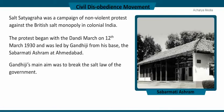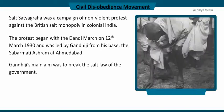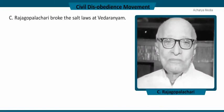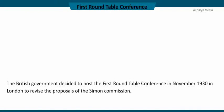His main aim was to break the salt law of the government. He broke the salt law on April 6, 1930, at Dandi village on the western coast of India in Gujarat, by preparing salt after boiling the seawater. This sparked large-scale acts of civil disobedience against the British Raj's salt laws by millions of Indians.